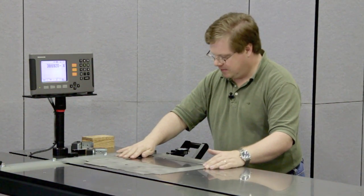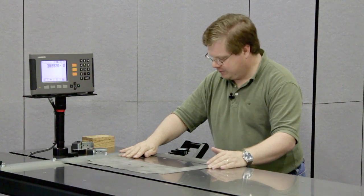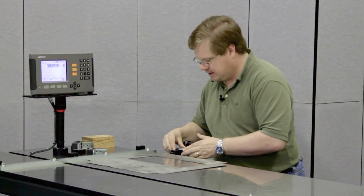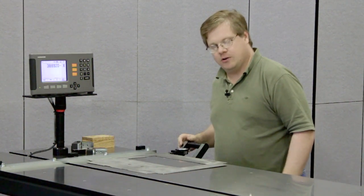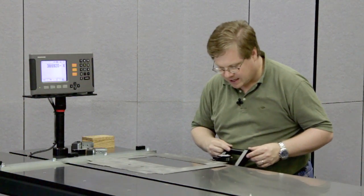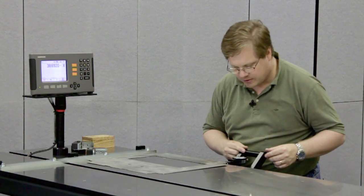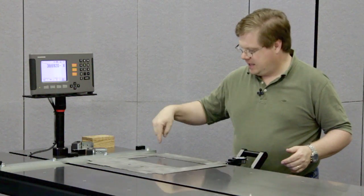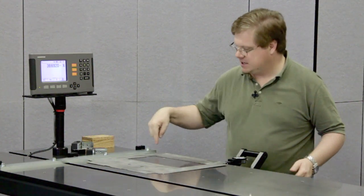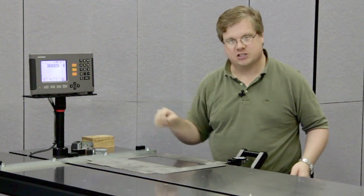So you put your sheet up against the stop bar, hang it out over the edge, and set your dial indicator to zero. Now when you move the indicator along the edge of the part, you're going to see the variation as to how far this edge is out of square with that edge of the part.